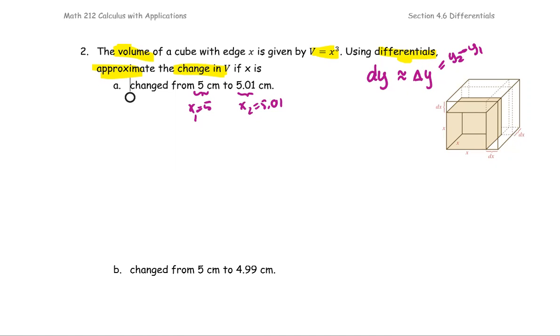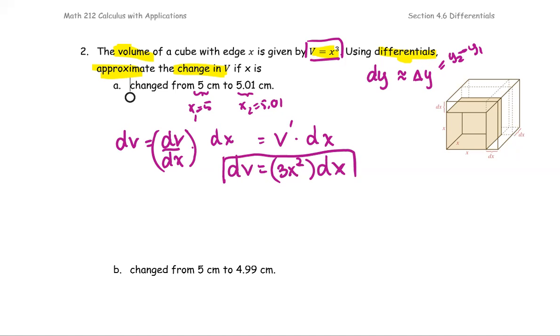To find the differential, dV is from the derivative of the volume with respect to x multiplied by dx. The derivative is V prime, so we rewrite it as the notation V prime instead of dV/dx. Since V is x to the third, V prime is 3x squared, and then multiply by dx. Now we get the formula for the differential V.